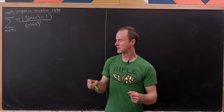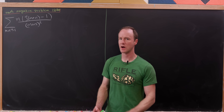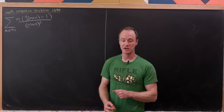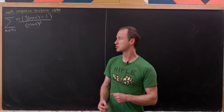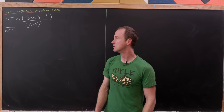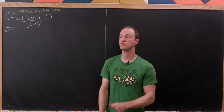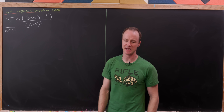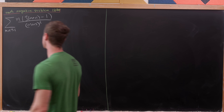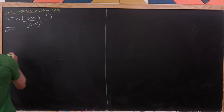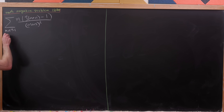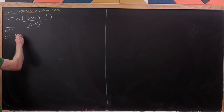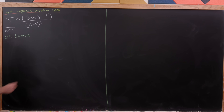Let's observe that there's something going on here with the expression m plus n. Our first strategy will be to re-index this to make m plus n its own index. So we're going to set l equal to m plus n.